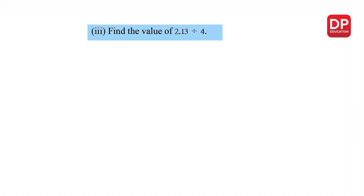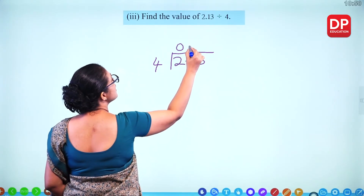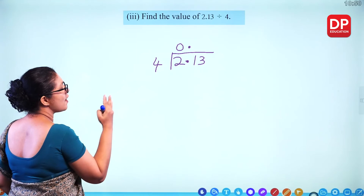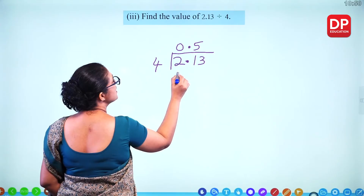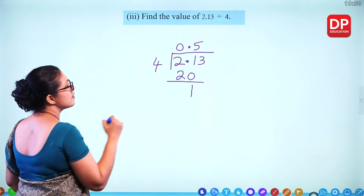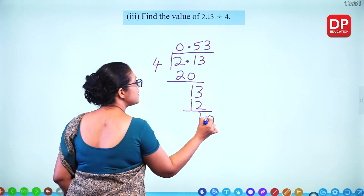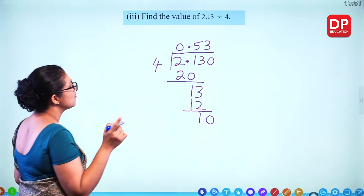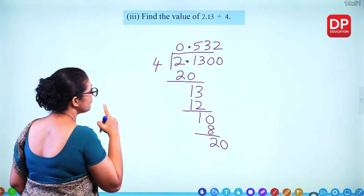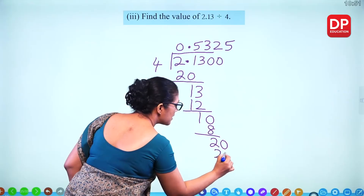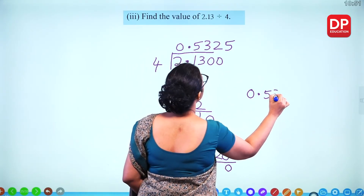For 2.13 divided by 4: for 2 that is nothing, align the decimal point. 4 times 5 is 20 (1 remaining). For 13, 4 times 3 is 12 (1 remaining). Take a zero: for 10, 4 times 2 is 8 (2 remaining). Take another zero: for 20, 4 times 5 is 20, remainder 0. The answer is 0.5325.